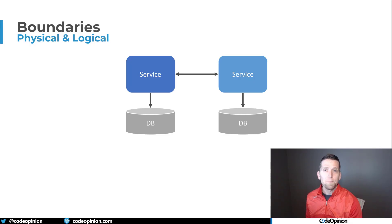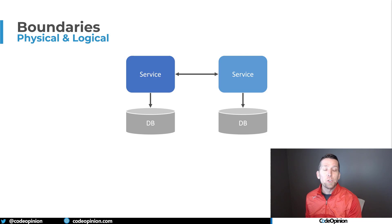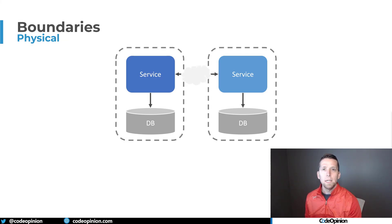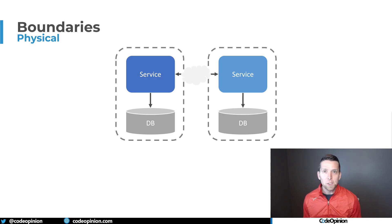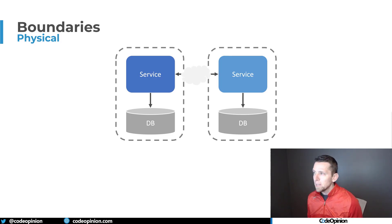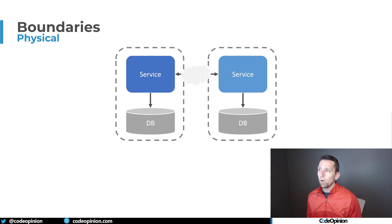To illustrate this, let's say we have two different services. Each service in this case has its own database, and let's say these two services are coupled in some way. Now if you were to ask most people, I think they would say that each service and database is its own logical and physical boundary. This dotted line here indicates that you're going to need to cross that network — that physical boundary — in order to interact with another service.